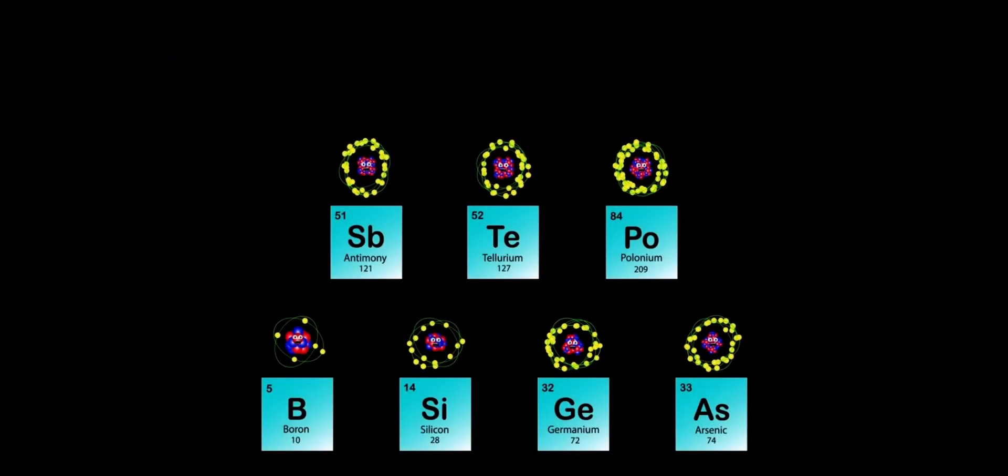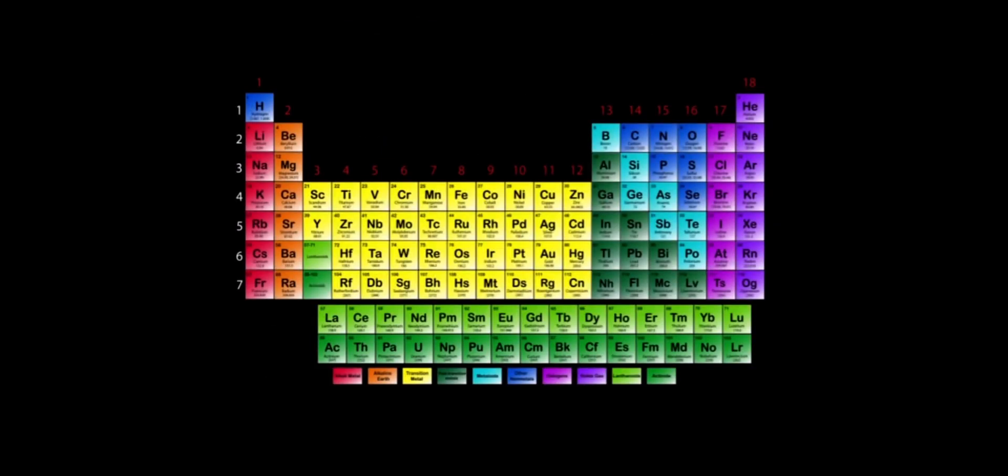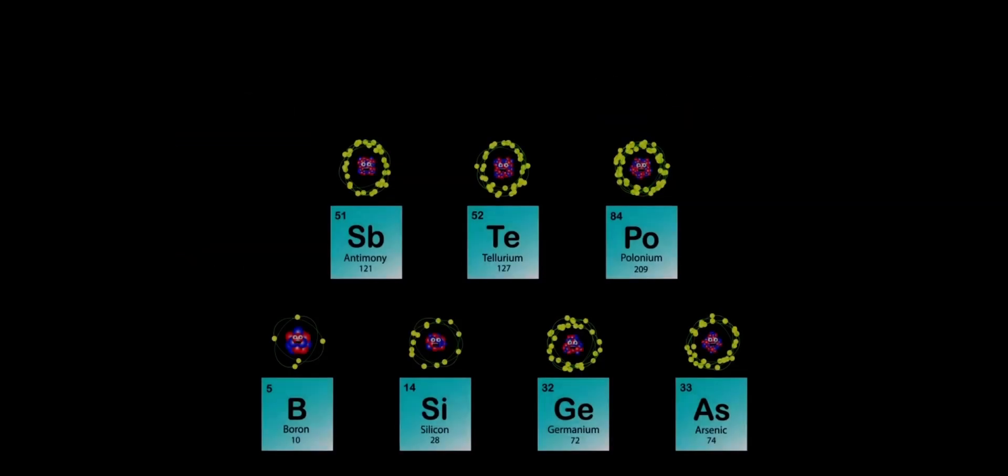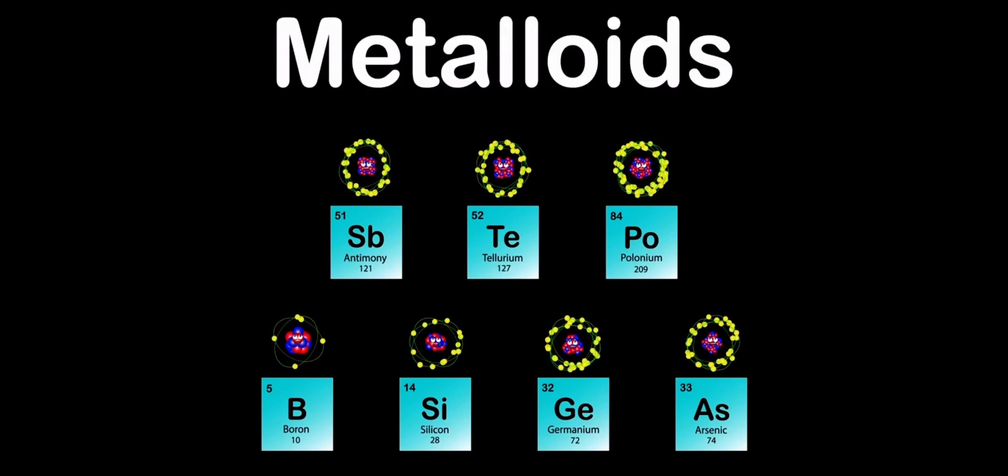We are the Metalloids of the Periodic Table. Groups 13 through 16 and periods 2 through 6 is where you'll find us in the Periodic Table Mix. We are the Metalloids of the Periodic Table.